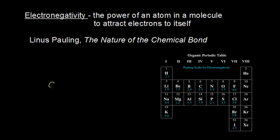If I look at a molecule, I'm going to compare two atoms — carbon and oxygen — in terms of electronegativity. To do that, I need to look at the organic periodic table, which shows the elements most commonly used in organic chemistry. In blue, it gives us the Pauling scale for electronegativity, which allows us to compare different elements in terms of their electronegativities.